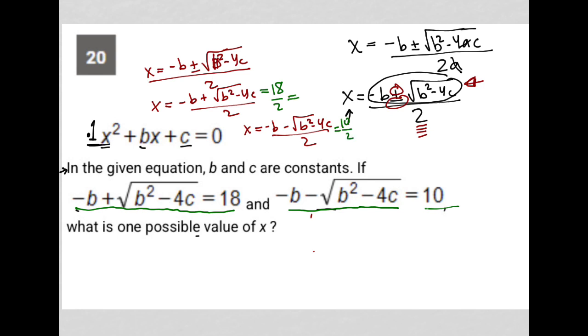Our answers are 18/2 = 9 and 10/2 = 5. Because the question asks for just one possible value of x, either 5 or 9 will work. You can bubble in either 5 or 9 for a correct answer.